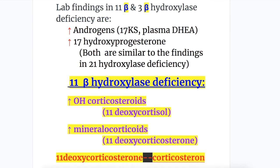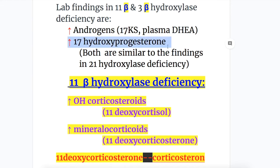The lab findings in 11 beta and 3 beta hydroxylase deficiency include increases in androgens, 17-ketosteroids, plasma DHEA, and 17-hydroxyprogesterone, similar to what occurs in 21 hydroxylase deficiency.